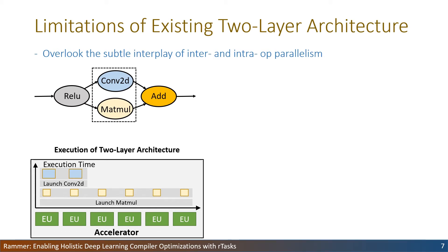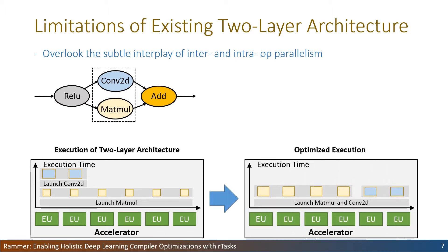Furthermore, the two-layer scheduling approach overlooks the subtle interplay between intra- and inter-operator parallelism. Here is an example: the Conv2D and MatMul operators have no dependencies and thus could run in parallel. However, in the two-layer architecture, to maximize operator performance, each operator will greedily span as many execution units as possible. While each EU may not be fully utilized, Conv2D may need to wait for the MatMul operator due to the lack of EUs. However, if we take both inter- and intra-operator parallelism into consideration, we could reduce the parallelism of MatMul and schedule Conv2D to the remaining EUs to make both operators run in parallel, which may result in lower execution time.